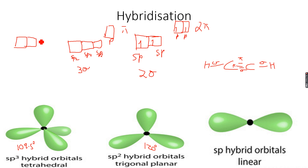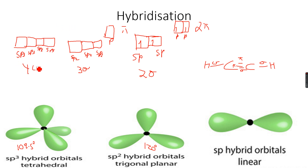For sp3 hybridization, we have four sp3 hybridized orbitals and no remaining p orbitals, so we have four sigma bonds and zero pi bonds. In total, carbon will always form four bonds: either four sigma and zero pi, three sigma and one pi, or two sigma and two pi.